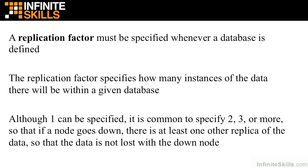Although one can be specified as a replication factor, it's common to specify two, three, or more so that if a node goes down, there's at least one other replica of the data so that the data is not lost with the down node.